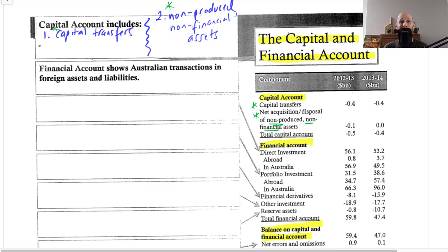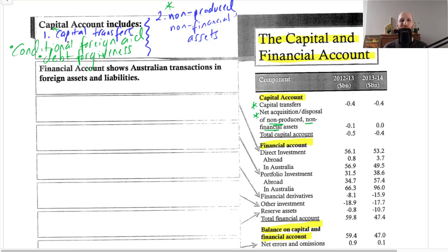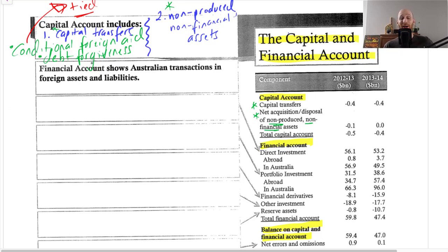Capital transfers include things like conditional foreign aid, which is when a government gives another government assistance tied to a particular purpose — it can only be used for a certain thing. The other item recorded under capital transfers is debt forgiveness, where a government that is owed money by another government decides to cancel that debt.